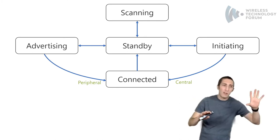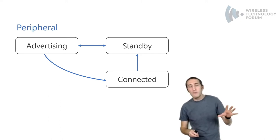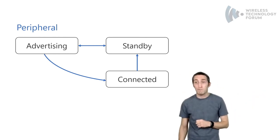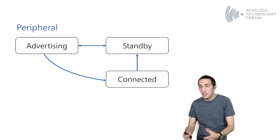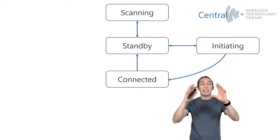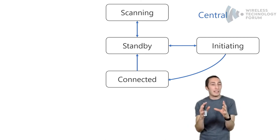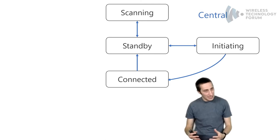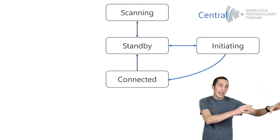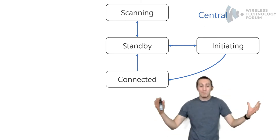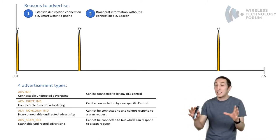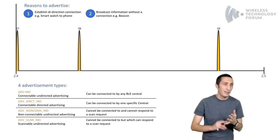Peripheral devices go from standby to advertising, sending out an advertisement packet on each of the three advertising channels. If they get a connection request, they move from advertising to connected. The central device goes from standby to scanning, listening to advertising packets. If it hears an advertising packet it likes, it goes back to standby, then into the initiating state, sends a connection request, and moves into the connected state. Only one packet takes a pair of devices into the connected state.